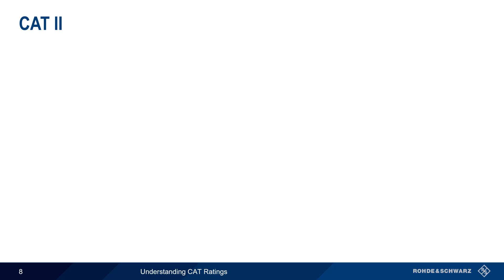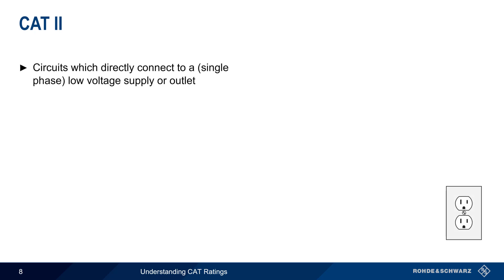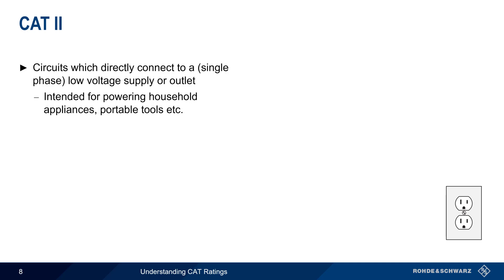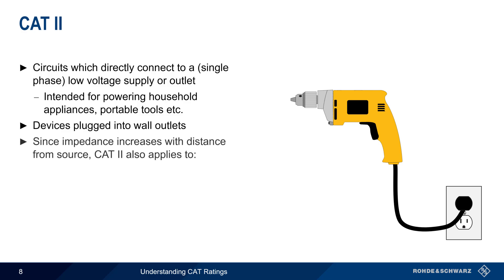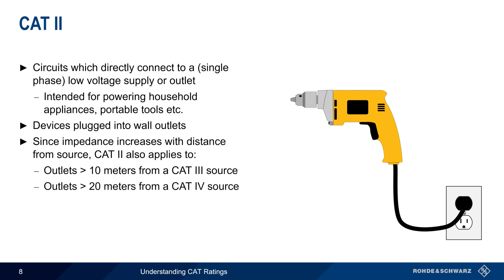CAT 2 applies when making measurements of circuits that are directly connected to a single-phase low-voltage supply or outlet. These outlets are intended for powering common household appliances, portable tools, etc. This category also applies to the devices plugged into these wall outlets or sockets themselves. Note that increasing distance from a voltage source means increased impedance, and thus a lower danger. So CAT 2 also applies to outlets that are more than 10 meters from a CAT 3 source or more than 20 meters from a CAT 4 source.